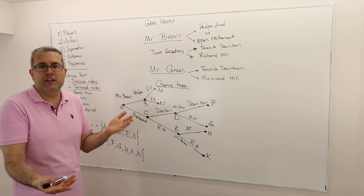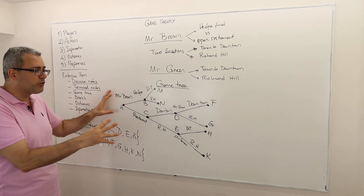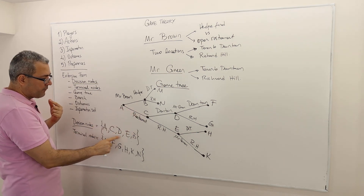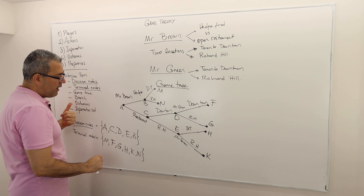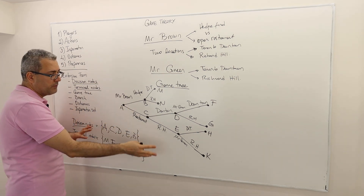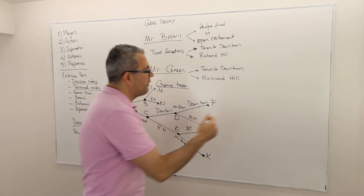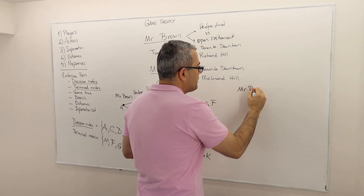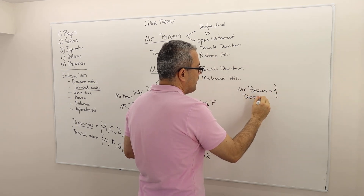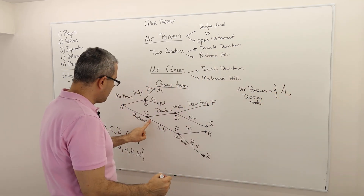Both structures are perfectly fine depending on the environment you want to analyze. In this game tree, the decision nodes are A, B, C, D, and E. Some belong to Mr. Brown — specifically A and C.